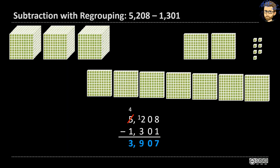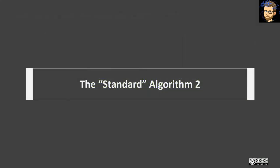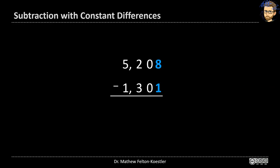There's another algorithm taught in other parts of the world. It starts similarly: eight minus one is seven, zero minus zero is zero. At the hundreds, instead of adjusting the top number's thousands, we add ten hundreds to the top and add one thousand to the bottom, making it a two. So twelve minus three is nine hundred, and five thousand minus two thousand is three thousand. What we've really done is added equal amounts to both sides, keeping the difference the same.